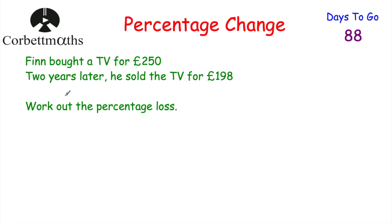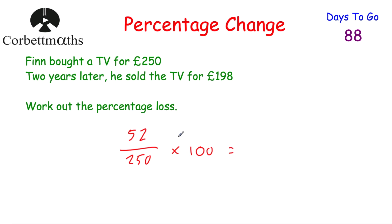Let's look at one last question — a calculator question. Finn bought a TV for £250, and two years later he sold it for £198. Work out the percentage loss. The change is £52. Divided by the original £250, multiplied by 100. So 52 ÷ 250 × 100 = 20.8. The percentage loss is 20.8%.